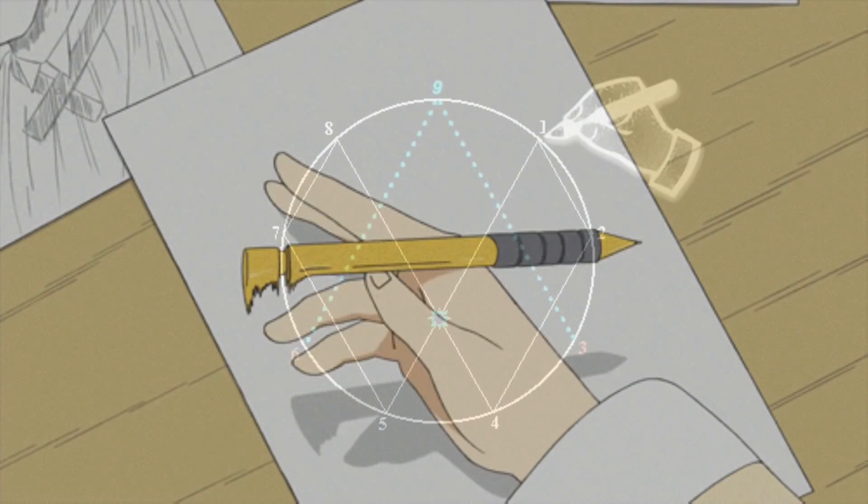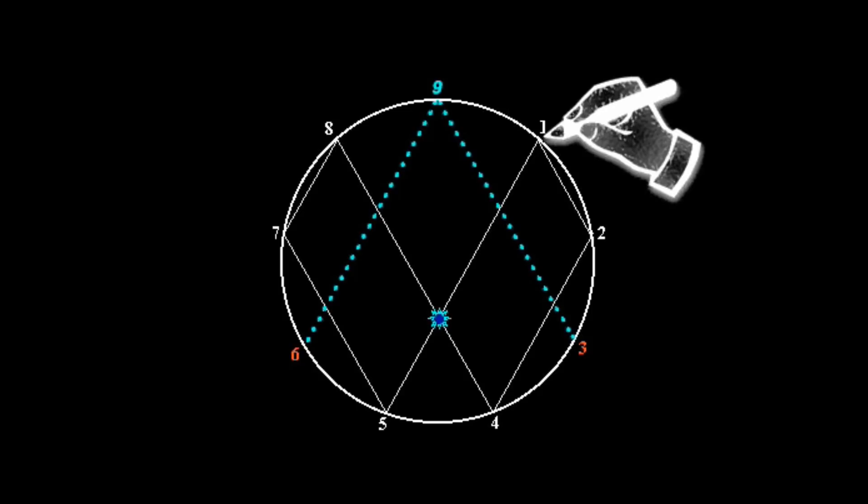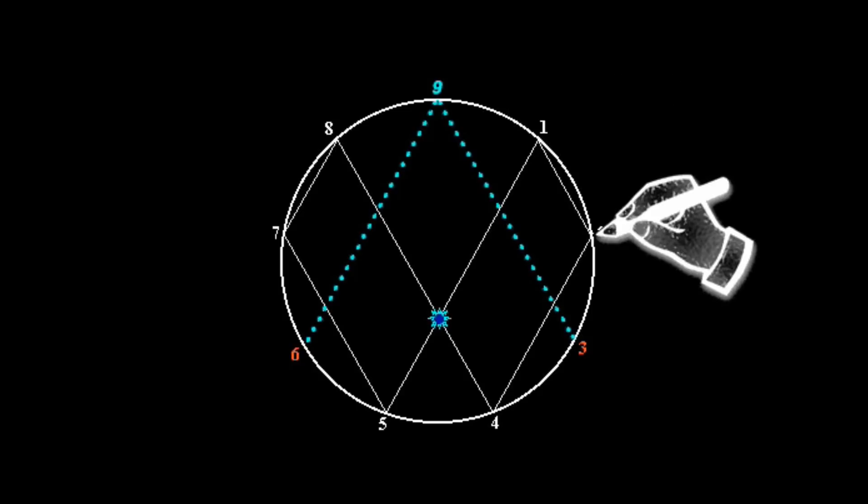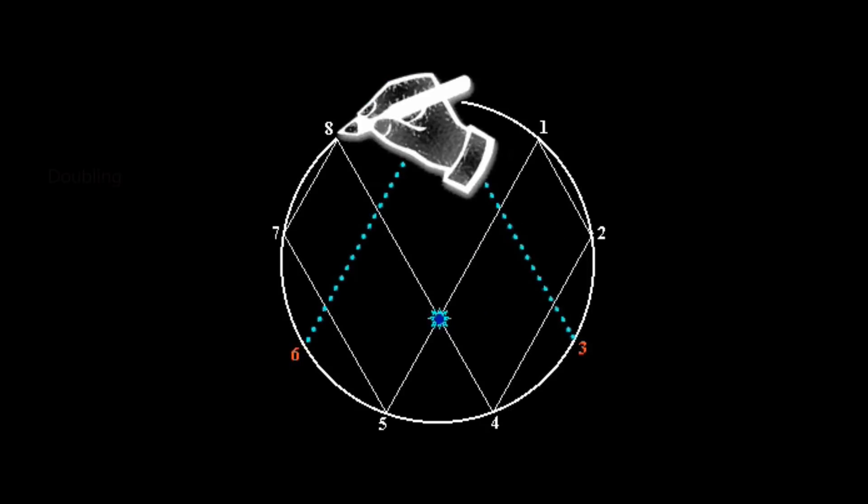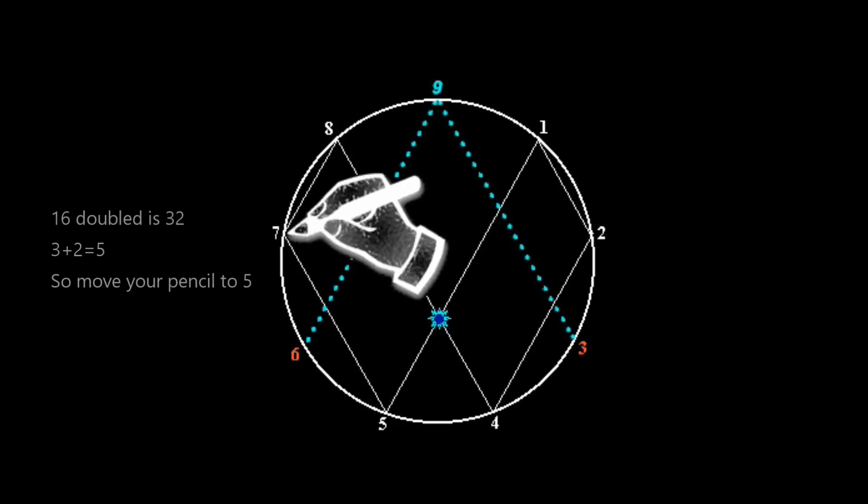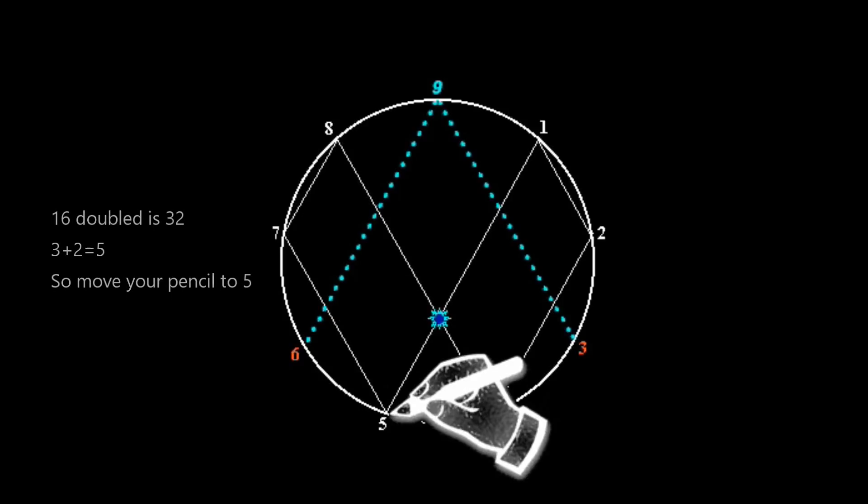Put your pencil on the number 1. Now move your pencil in a straight line to number 2. Then in another straight line to number 4. Then across the center to 8. Notice that you are doubling. So next should be 16. And it is. But 1 plus 6 is 7. So move your pencil to 7. Then 16 doubled is 32. 3 plus 2 is 5. So move your pencil to 5.